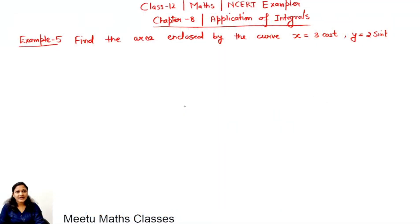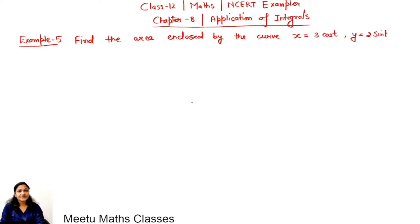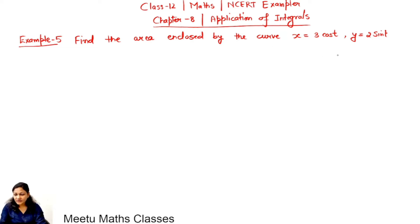Welcome to B2Pax classes. Today we are doing class 12 mathematics, NCRT exam club, chapter 8 — Application of Integrals — and this is Example 5. Find the area enclosed by the curve x equals 3 cos t and y equals 2 sin t.